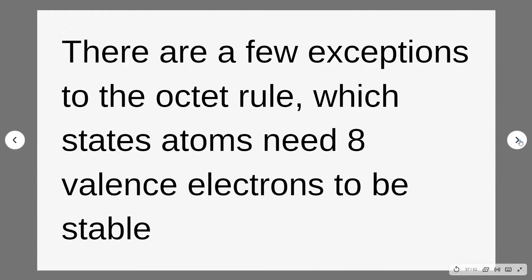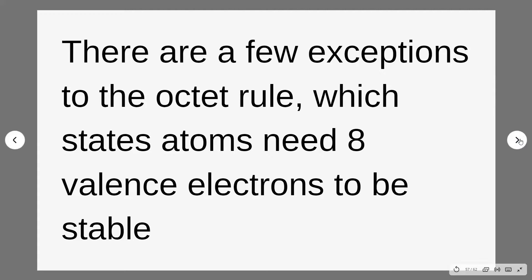There are a couple of exceptions to what's called the octet rule. The octet rule just means that each atom needs eight electrons — 'oct' means eight — in its valence shell to be stable.